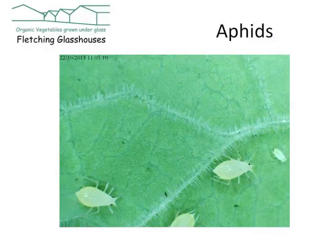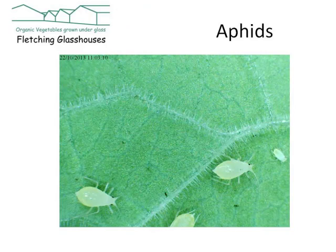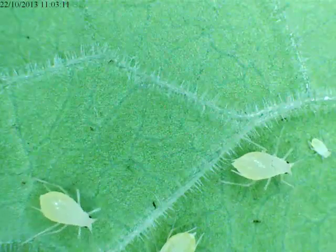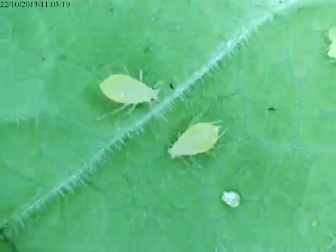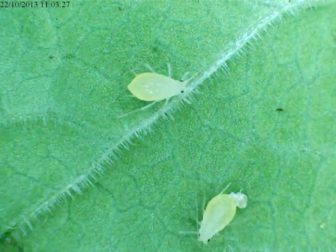Here are the common greenfly that you're probably most familiar with, which we tend to see on roses. These are much too big to be attacked by the kind of parasites we were talking about, so we need to use more native predators like ladybirds or lacewings.